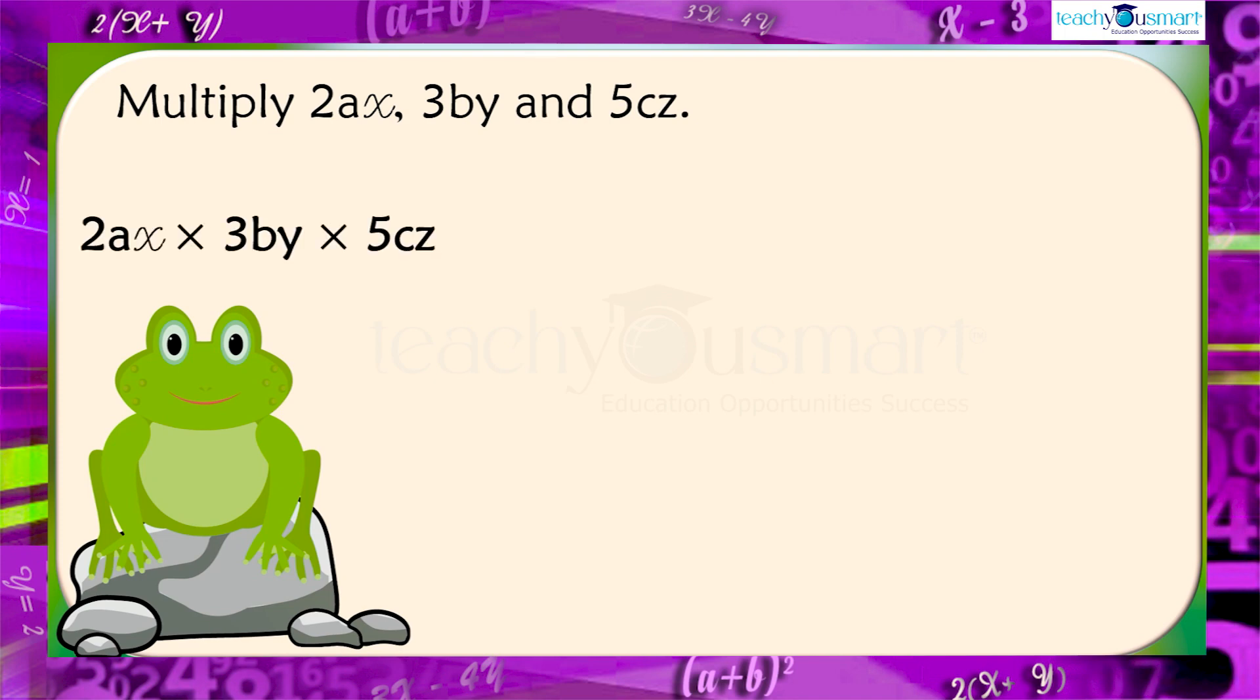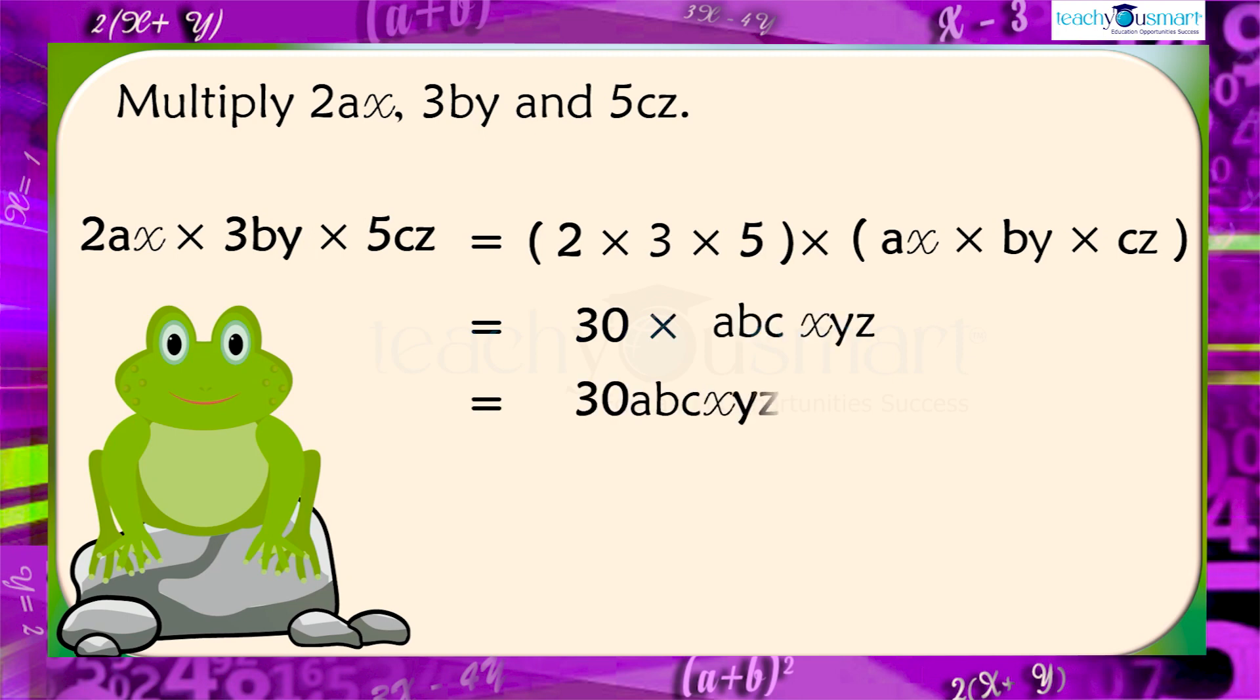2AX multiplied by 3BY, multiplied by 5CZ. Equals 2 multiplied by 3, multiplied by 5, multiplied by AX, multiplied by BY, multiplied by CZ. Equals 30 multiplied by ABCXYZ. Equals 30ABCXYZ.